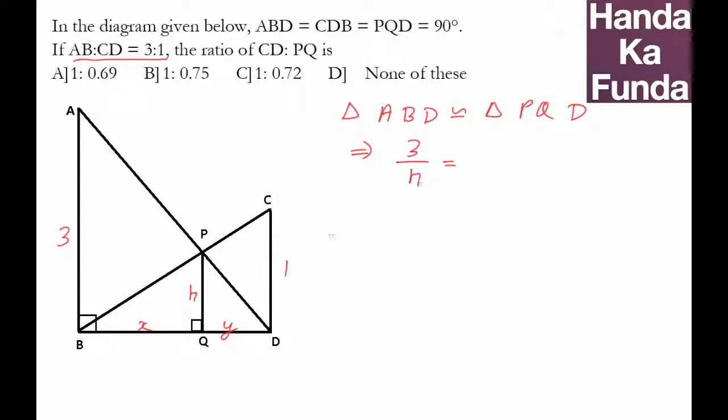Three is the big height, h is the small height, which will equal base of the small triangle that is x plus y upon base of the small triangle. Big triangle is x plus y, small triangle is just y.